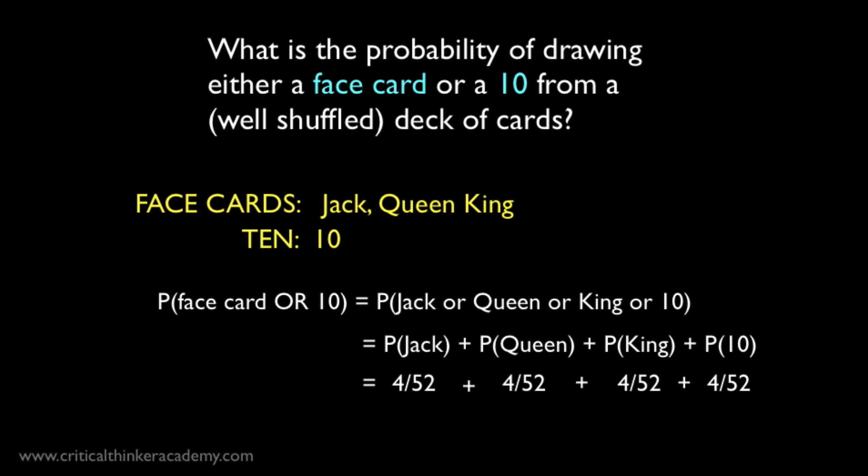The rest is just algebra. Note, however, that you can simplify the algebra by recognizing that 4 out of 52 is just 1 in 13. So the answer is 4 out of 13, which is roughly 0.31 or 31%.